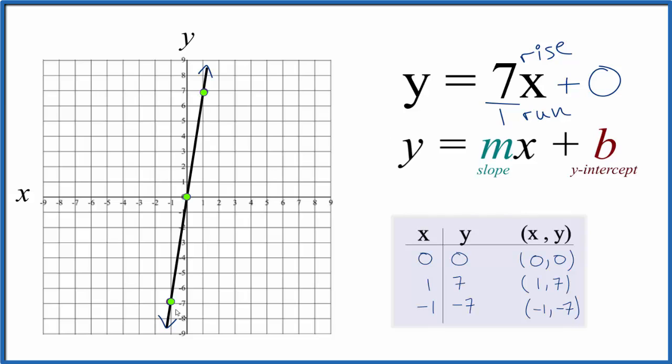And again, we could keep going down here, but we've kind of run out of graph paper. But this confirms that we did the first part correctly, and that we have the correct graph for y equals 7x.